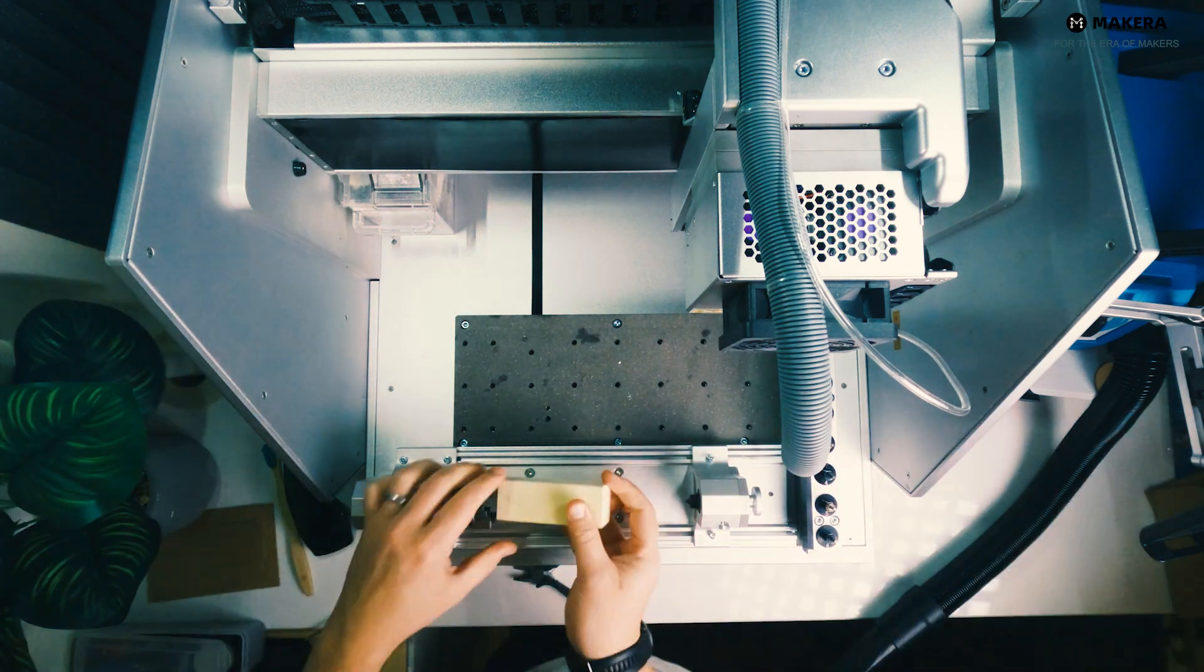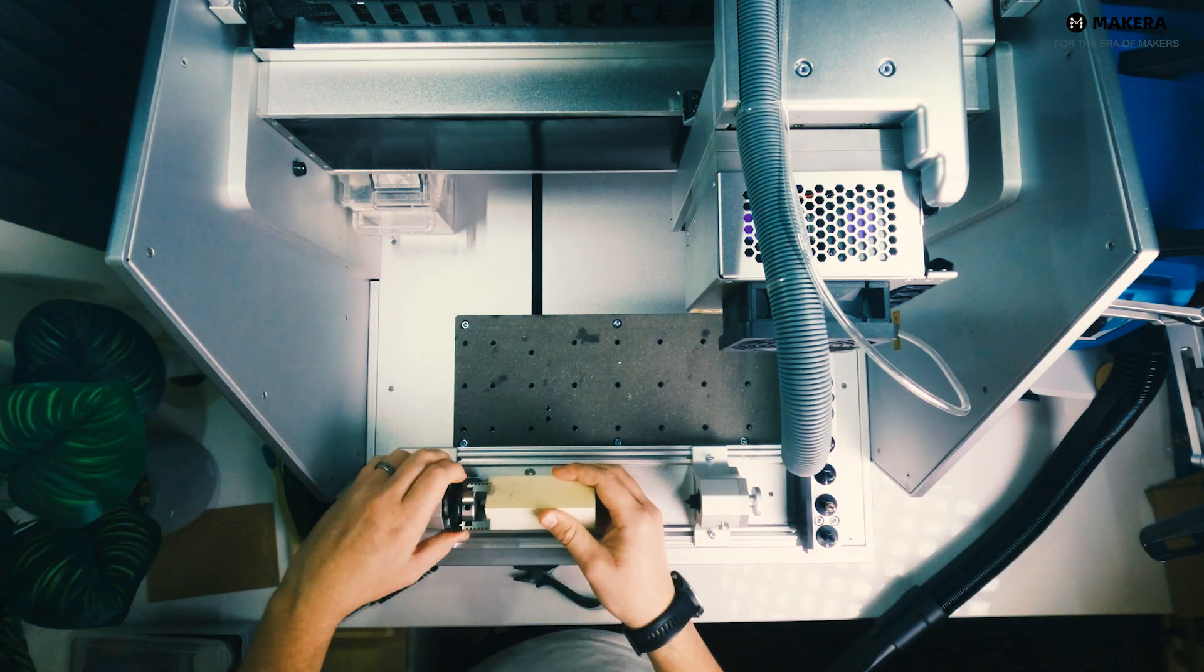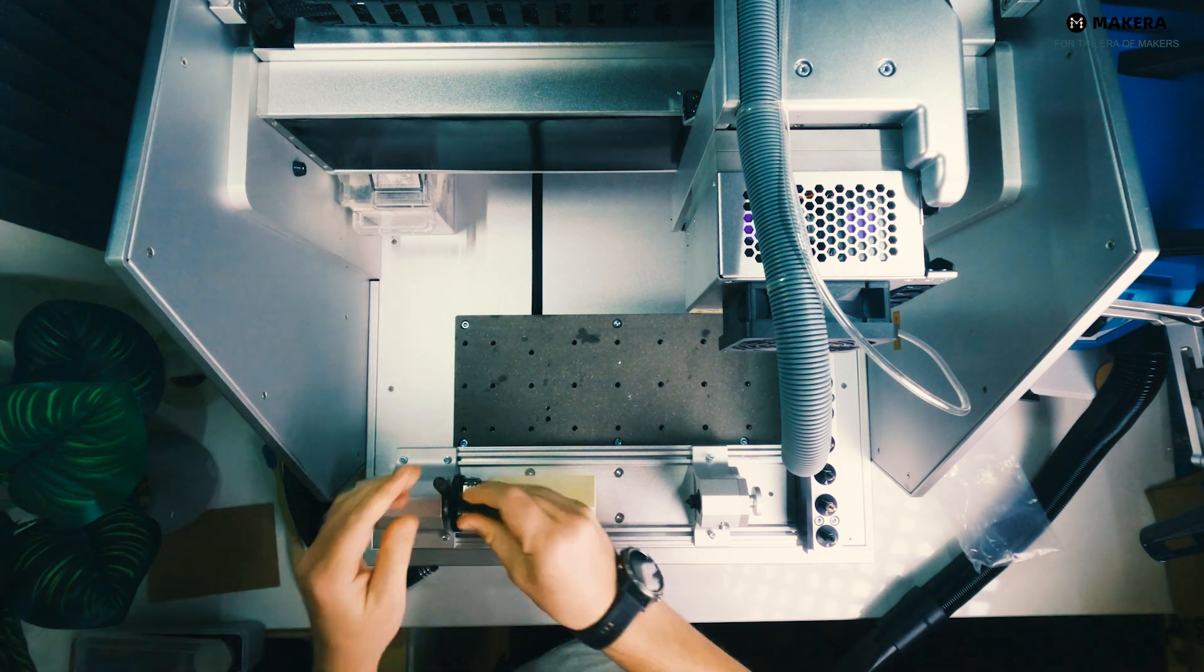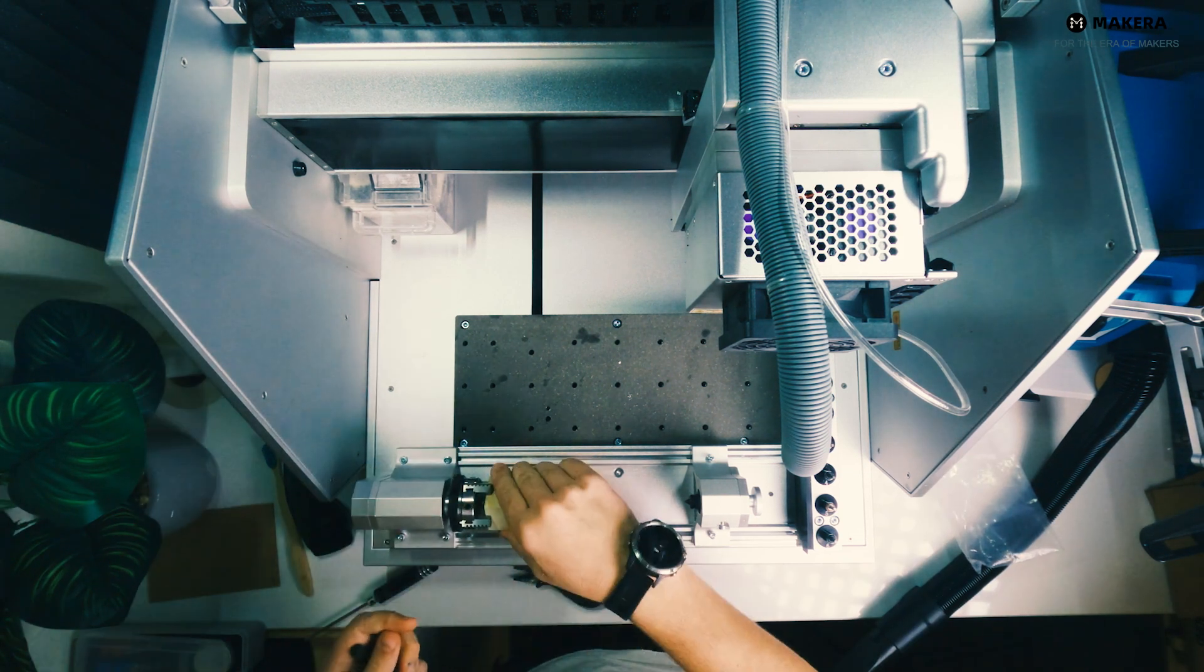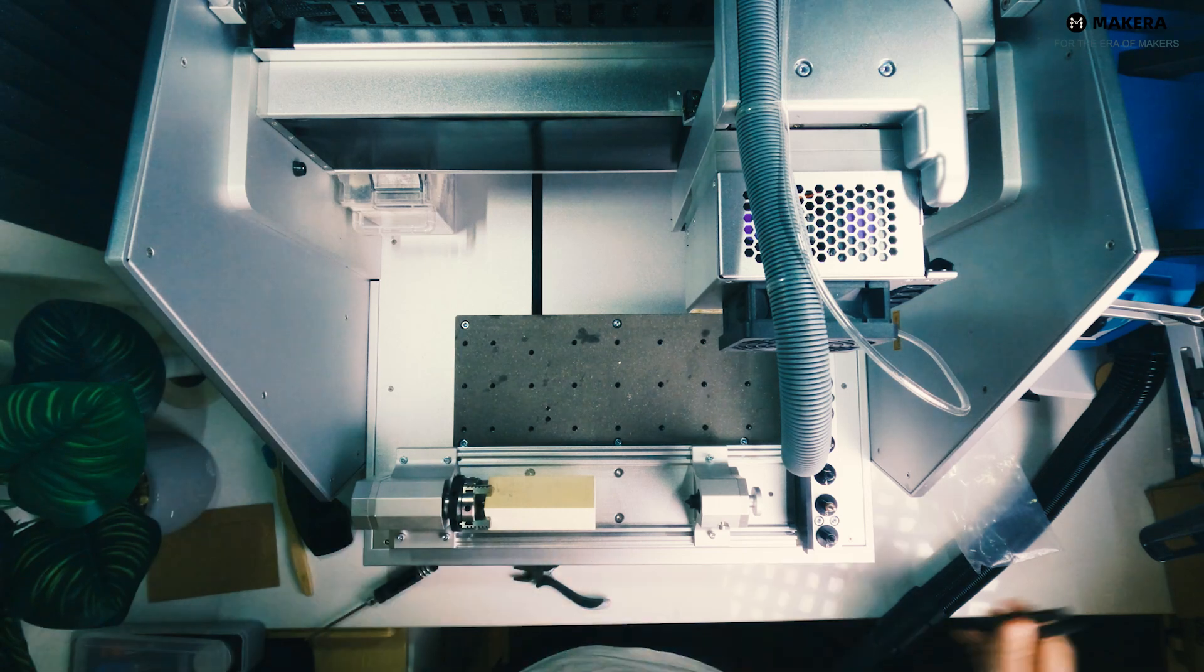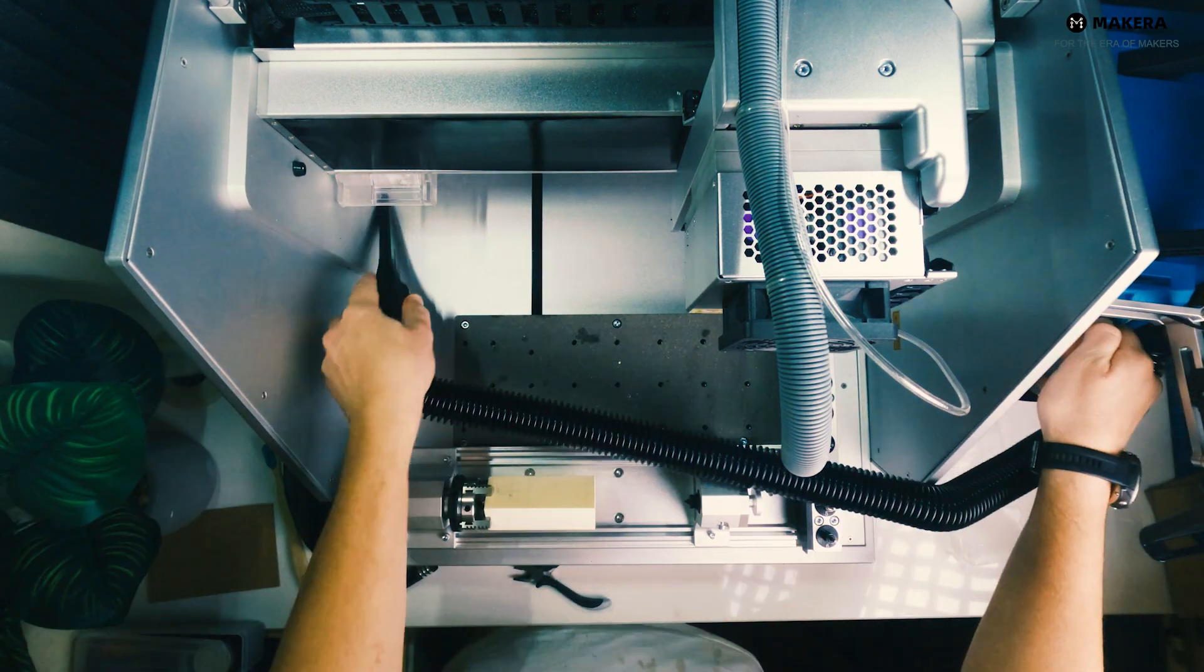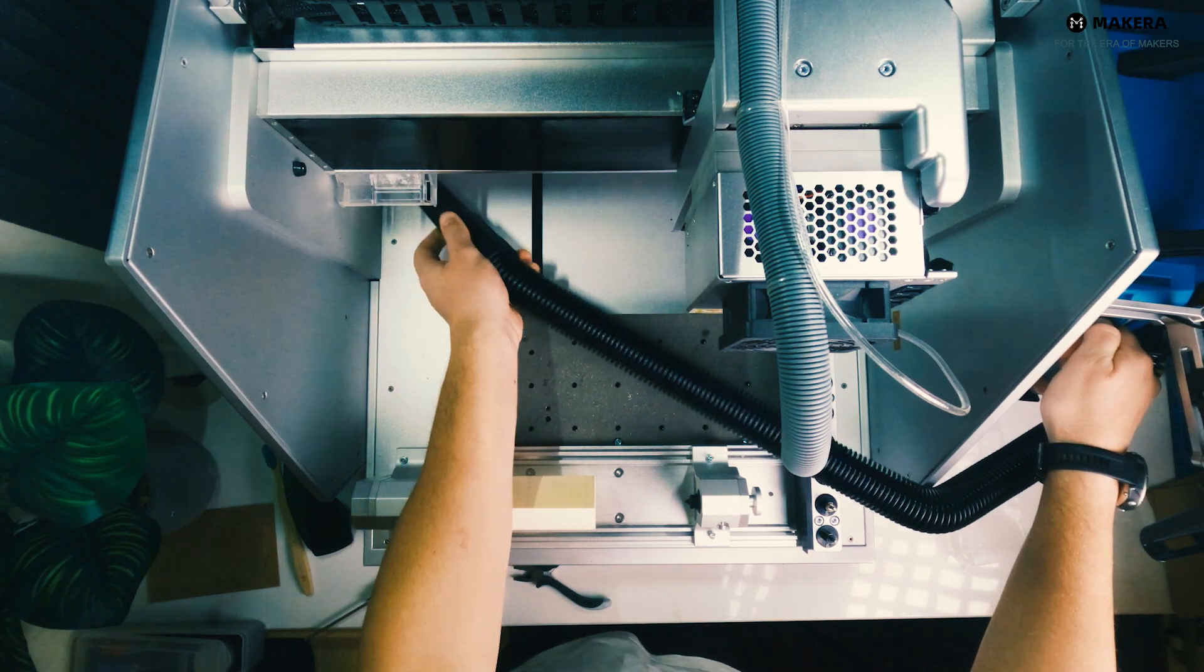To mount the material into the unit, you need to use the two wrenches that comes with the module. First, tighten with your hand and then use the wrenches to secure. Reminder to remove the dustbin when using the 4th axis and also remove the dust shoe as that might cause collision.